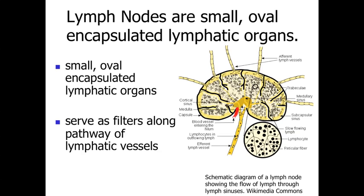The first of these encapsulated organs are going to be the lymph nodes. Lymph nodes are going to be relatively small, oval, or maybe kidney bean-shaped encapsulated structures. They're going to have a distinct anatomical structure with a connective tissue boundary around the outside, and this distinct anatomical appearance will correspond to the physiological properties where we're essentially using these lymph nodes as a filter.